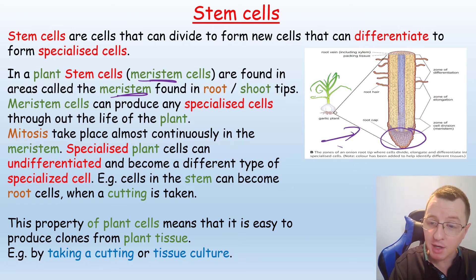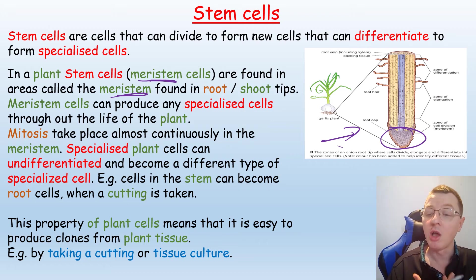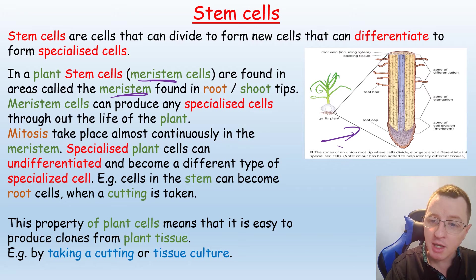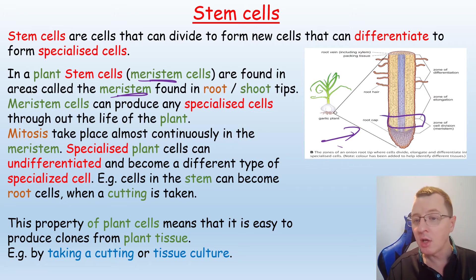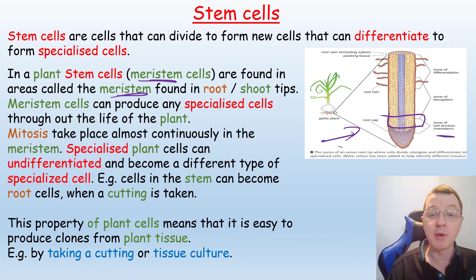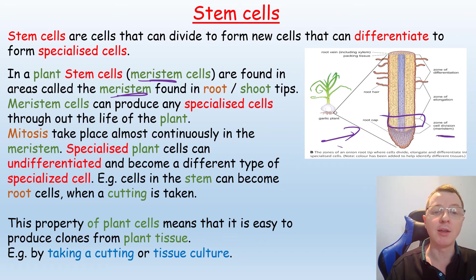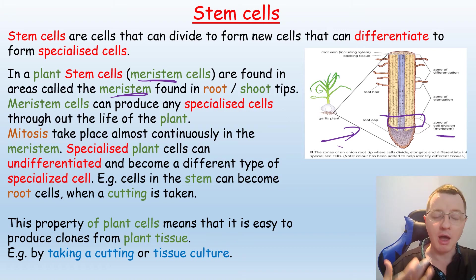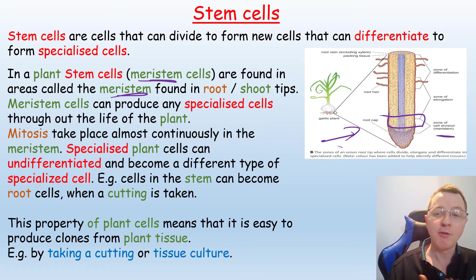You can see the root cap at the base, which will push the root through the soil and move the soil out of the way. Just behind that is a region called the zone of cell division, or the meristem, which contains adult stem cells. These allow mitosis to take place continually in the meristem, forming the specialised cells needed to form the shoots and roots of the plant.